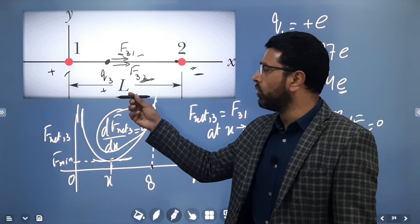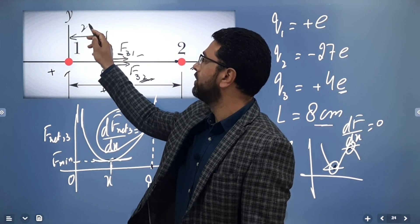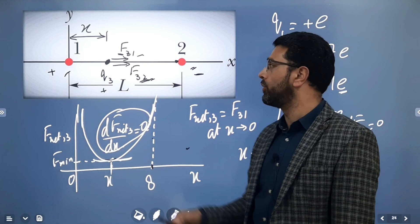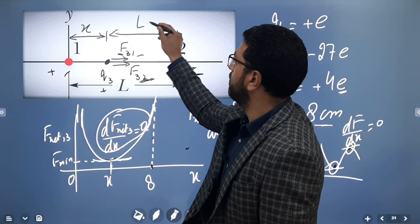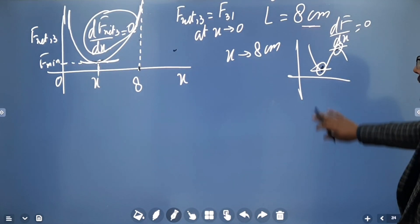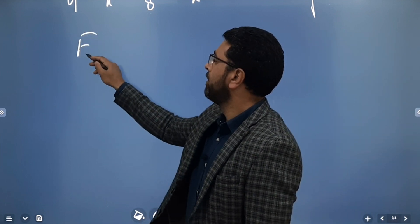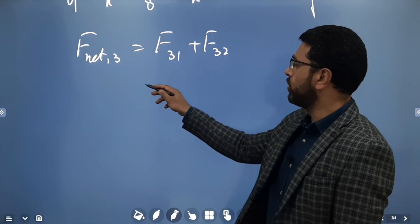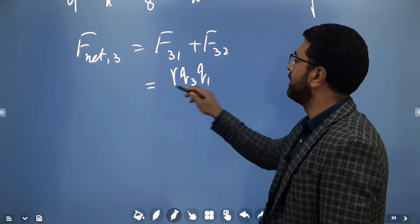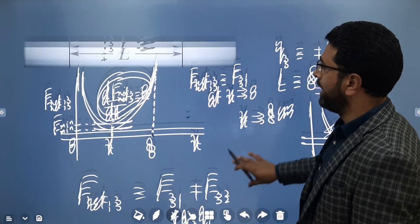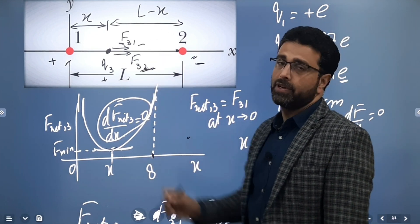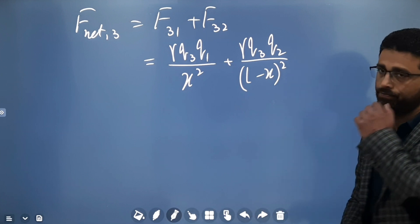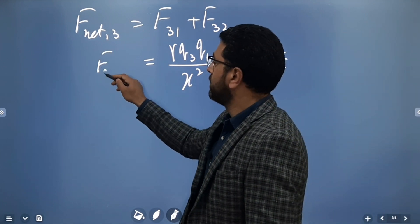To find the location of particle 3 for which force is minimum, let's call that position X. Then the distance from particle 3 to particle 2 is L minus X. The net force on particle 3 is F31 plus F32, which equals gamma Q3 Q1 divided by X squared, plus gamma Q3 Q2 divided by (L minus X) squared. Let's call this equation 1.